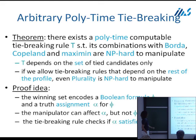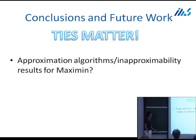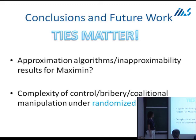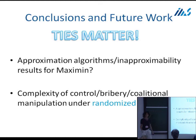To summarize: I hope I have convinced you that when talking about voting manipulation, ties matter. What remains to be done: for Maximin I showed hardness for general utilities, but unlike Copeland, we don't have an inapproximability result - it might be approximable, which seems like a fun open problem. More generally, I think it's interesting to think about the role of randomization in voting and in preventing bad behavior - control, bribery, manipulation by coalitions. Some existing results in this area don't depend on tie-breaking rules, but some do, and for those it would be interesting to see what happens under randomized tie-breaking.